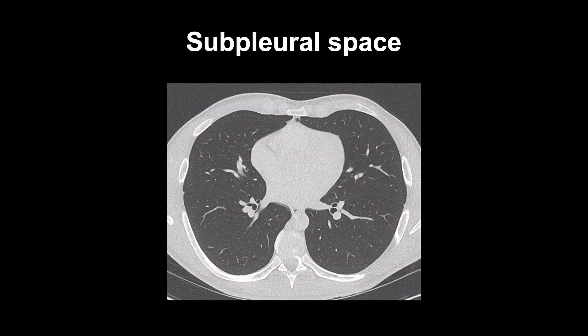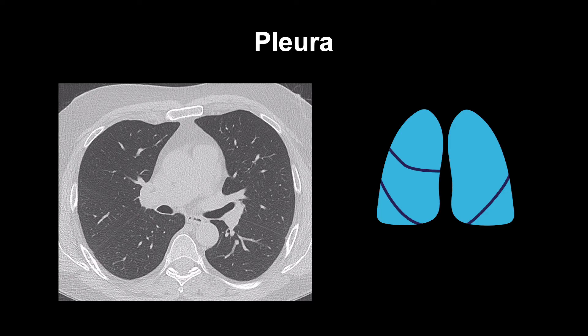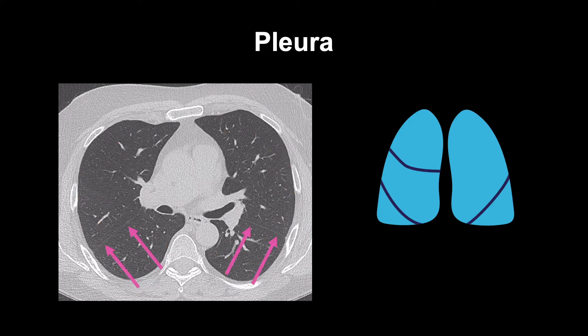No lung markings can be seen within 1 cm of the pleura, meaning there are no visible airways, vasculature, or interstitium in the subpleural space. The pleura is found at the lung edges and should be smooth, uniform, and sharply defined. Since normal pleura is less than 1 mm thick, it's usually not visible unless you are looking along a fissure. Only about 20% of people have all three complete fissures — the right oblique, right horizontal, and left oblique. Commonly, fissures are incomplete, or accessory fissures exist.